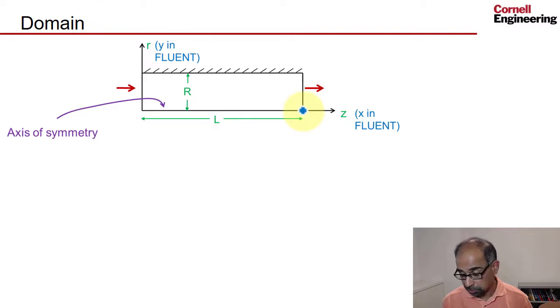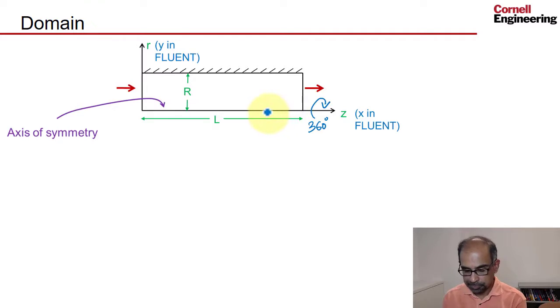If I take this rectangle and revolve it 360 degrees about the axis, I'll get the full pipe geometry. But I need to solve the governing equations in the rectangle because of there being no variation in the circumferential direction.